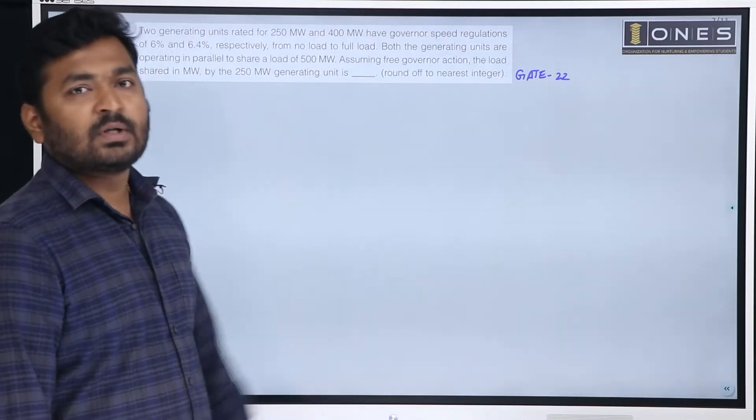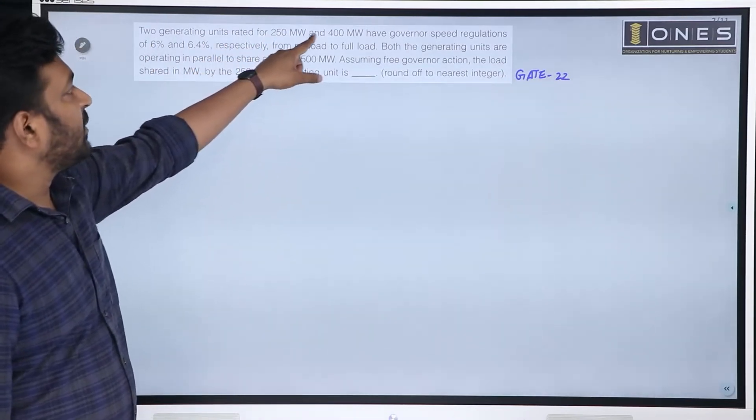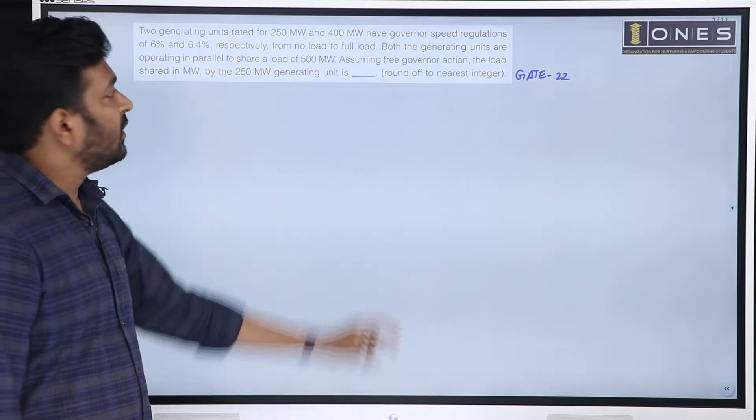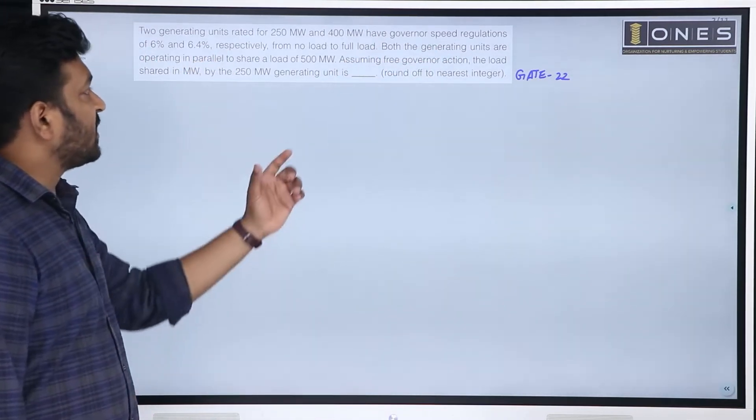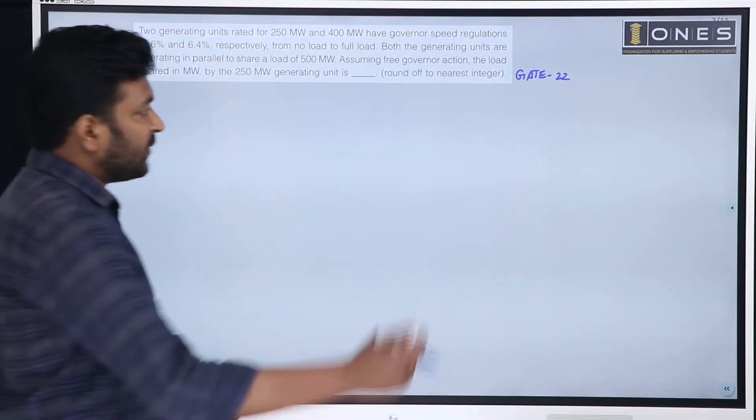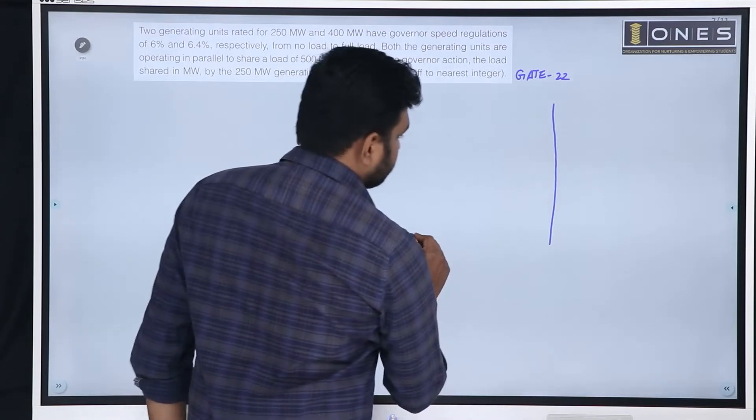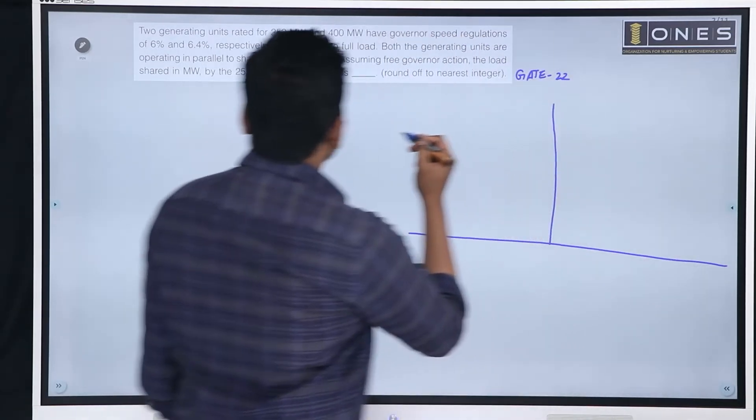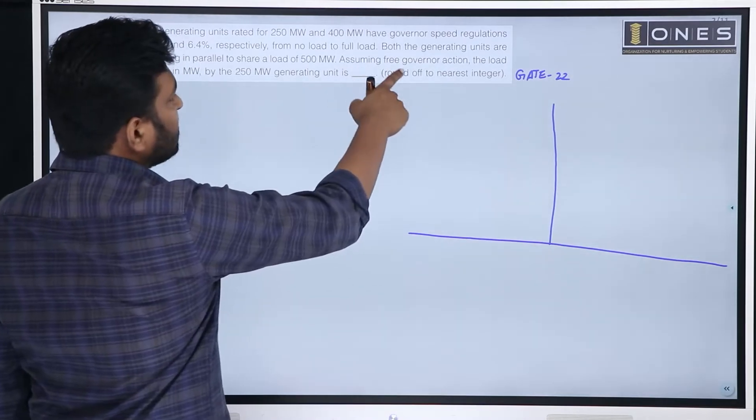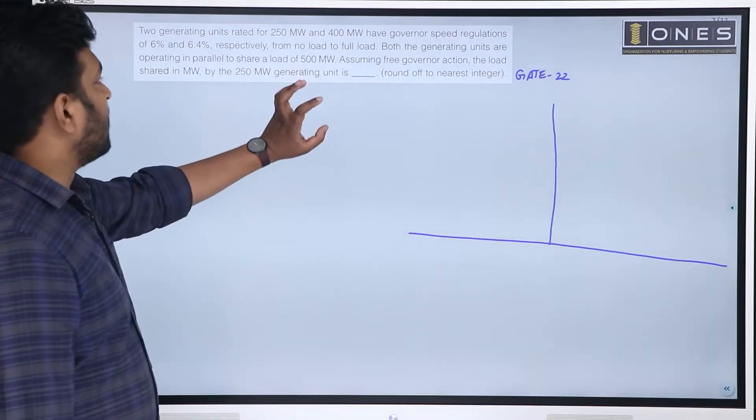Let us see what the question is. Two generating units, rated for 250 MW and 400 MW, have governor speed regulations 6% and 6.4% respectively from no load to full load. Let us see the characteristics. From no load to full load, both the generating units are operating in parallel to share a load of 500 MW.